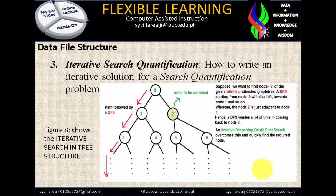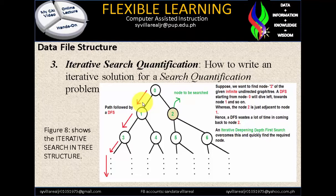Next we have iterative search quantification — how to write an iterative solution for a search quantification problem. Iterative searching is iterative: for example, you go to YouTube and type on the search, or Facebook and type on the search. It will look at everything you type — if you type C, they look for all the C's in the database; then you type A, it goes to CA. That is searching, which is why it is called iterative. Figure 8 shows the iterative search in tree structure.